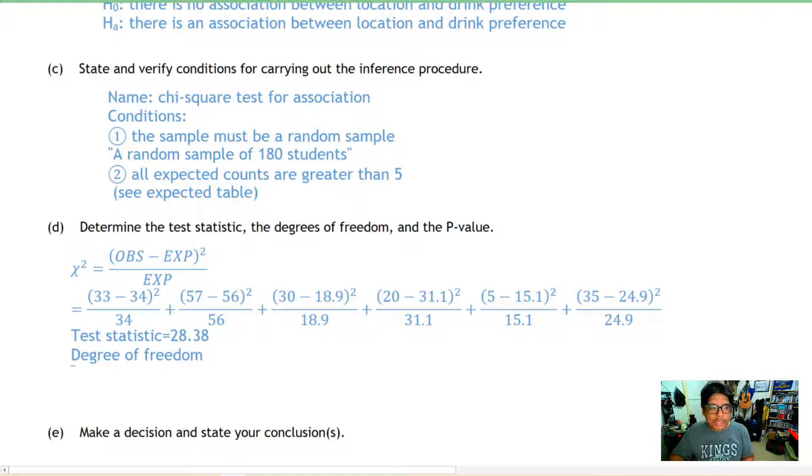Now we have to do the degree of freedom. The degree of freedom here is going to be the number of rows minus one multiplied by the number of columns minus one, so three minus one multiplied by two minus one, or just two.